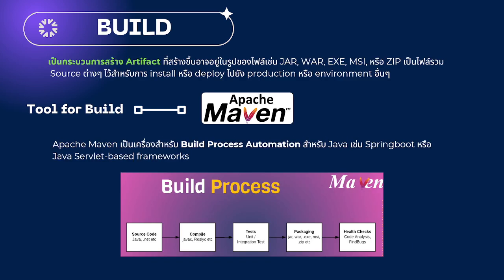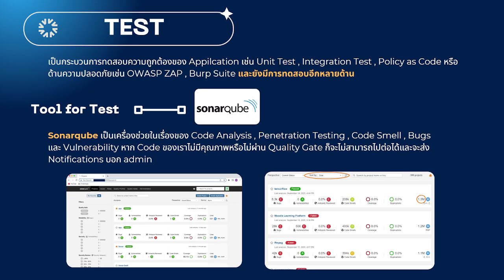The build tool we use is Apache Maven. It is a tool for build automation. SonarQube is the tool for code analysis, including penetration testing, code smell, bugs, and vulnerability detection.